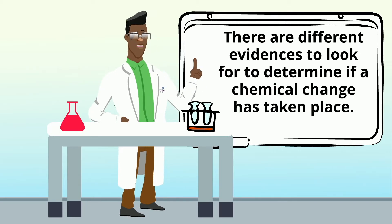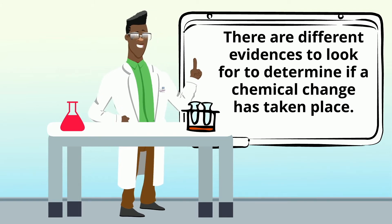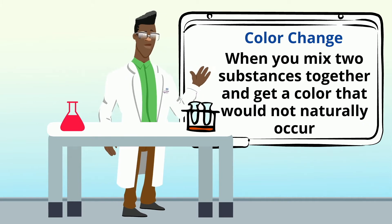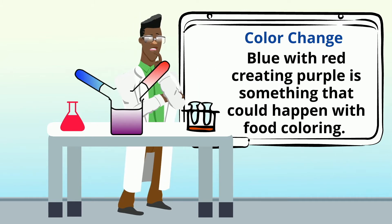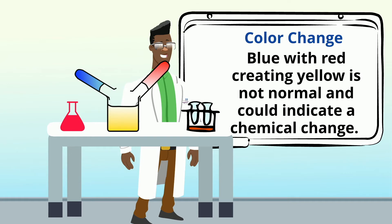There are different evidences to look for to determine if a chemical change has taken place. Color Change: When you mix two substances together and get a color that would not naturally occur. Blue with red creating purple is something that could happen with food coloring. Blue with red creating yellow is not normal, and could indicate a chemical change.